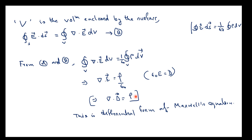This is the differential form of Gauss law in electrostatics — the differential form of Maxwell's first equation.